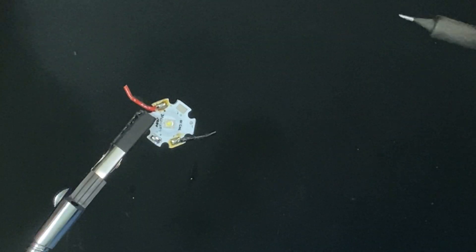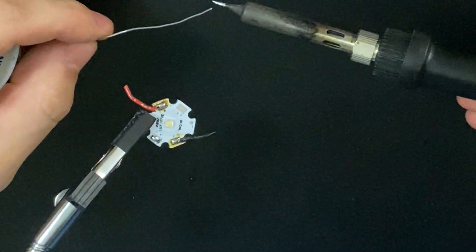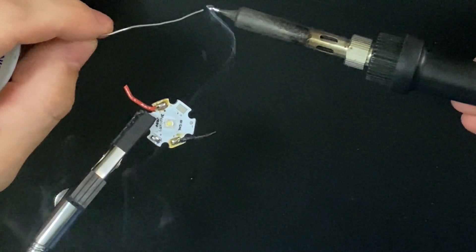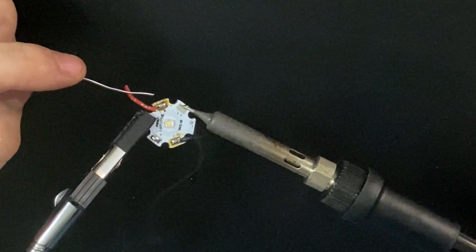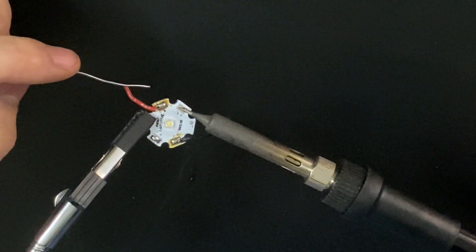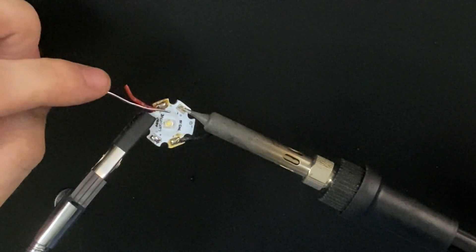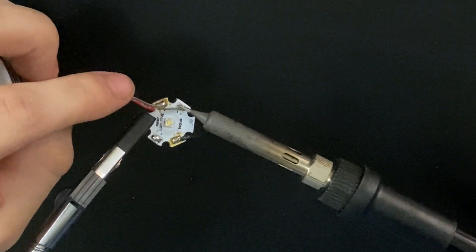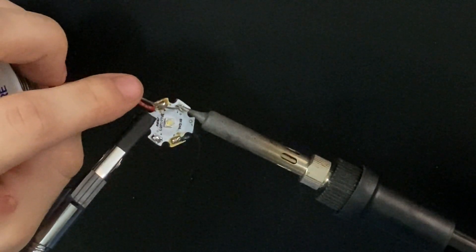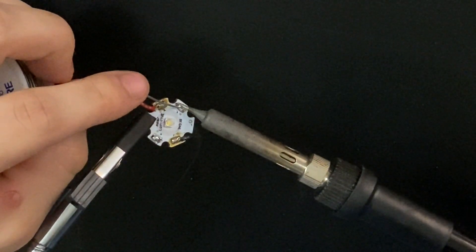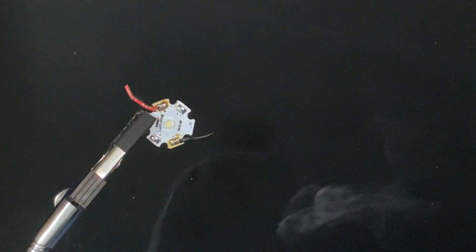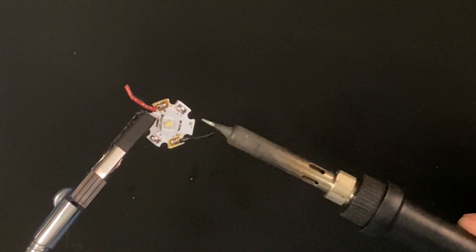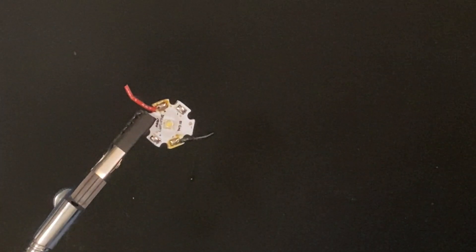First, we're going to pre-tin the LED. We're going to do that by putting a little solder on the iron, holding it to the pad, getting the pad hot, then adding a little more solder to it. And you want to wait about this long. And then you'll know your pad is pre-tinned. And that's what your pad is going to look like once you pre-tinned it properly.